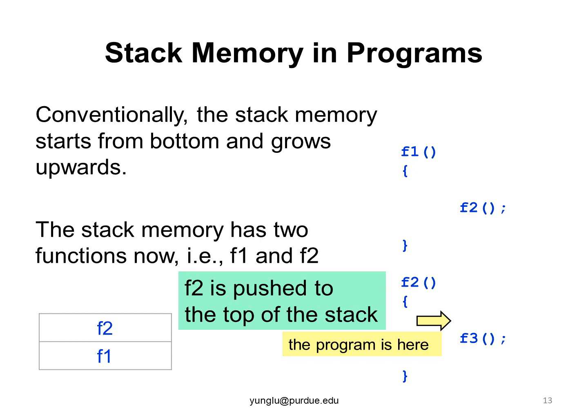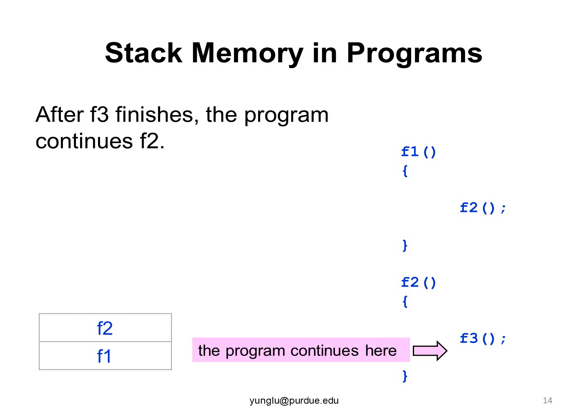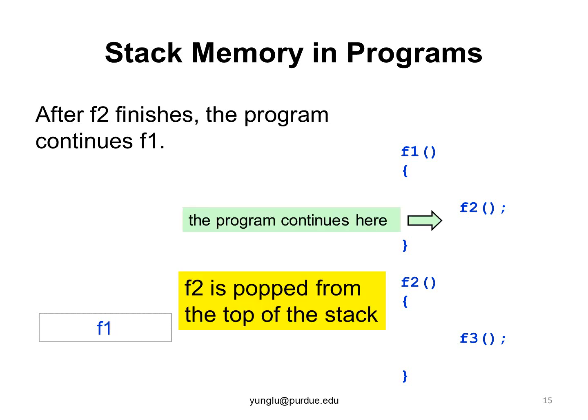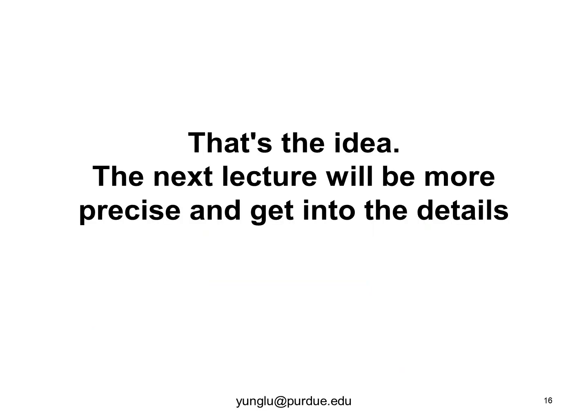When function f3 finishes, the program continues f2 at the location after calling f3. When function f2 finishes, the top of the stack memory is taken away. The stack memory has only f1 now, and the program continues from the location after calling f2. When an item is removed from the top of a stack, this item is popped from the stack. That's the idea of the stack memory.